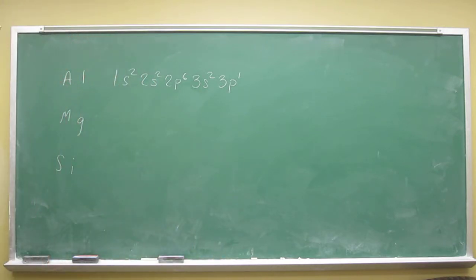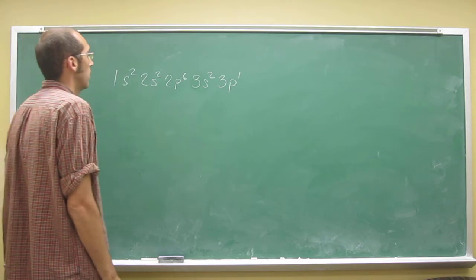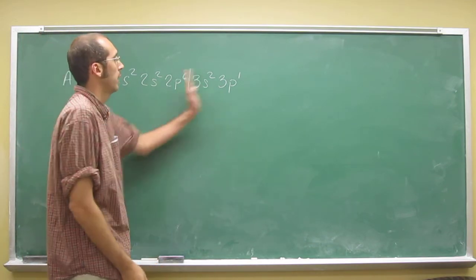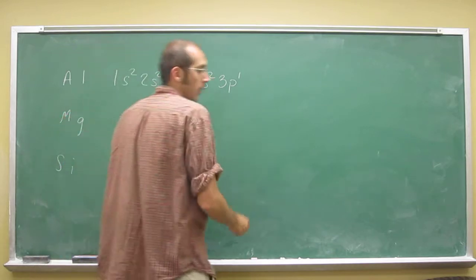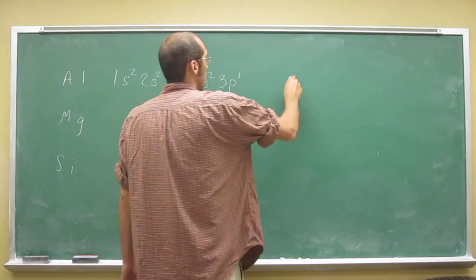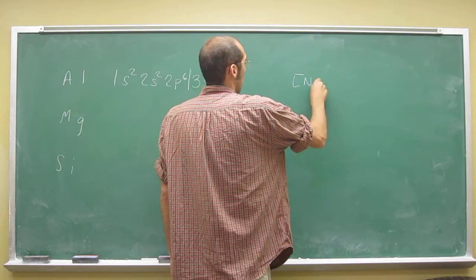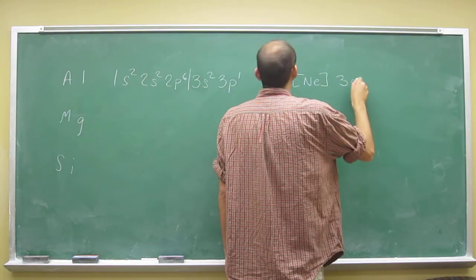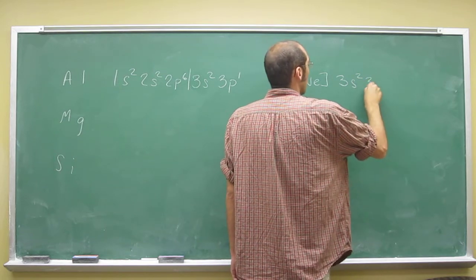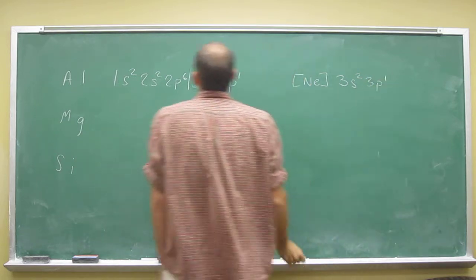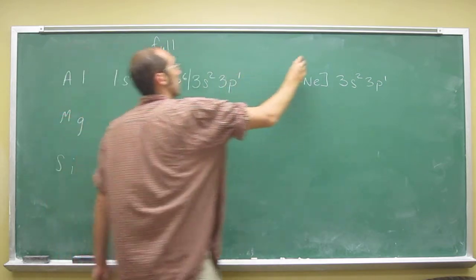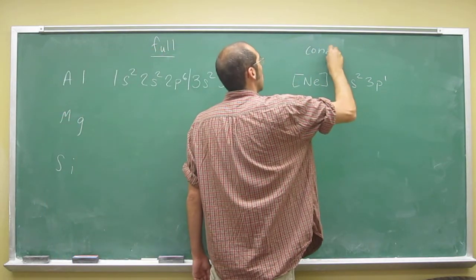Okay, so if you wanted to do the condensed electron configuration, you just cut off at the valence electron. So the noble gas before that, remember, is neon. So neon 3s2 3p1. Okay, so this is the full and this is the condensed.